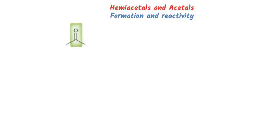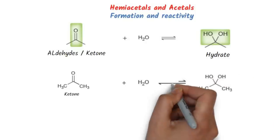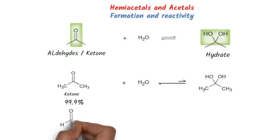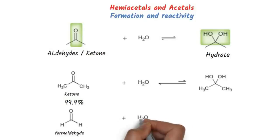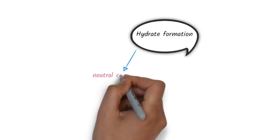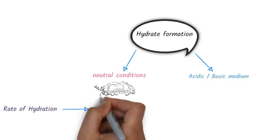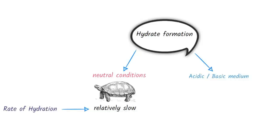When an aldehyde or ketone is treated with water, the carbonyl group is converted into a hydrate. In case of ketones, the position of equilibrium generally favors the carbonyl group rather than the hydrate. Except in the case of very simple aldehydes, such as formaldehyde, where equilibrium favors the hydrate. This hydration can be achieved either in neutral conditions or in acidic or basic medium. The rate of reaction is relatively slow under neutral conditions, but is readily enhanced in the presence of either acid or base.